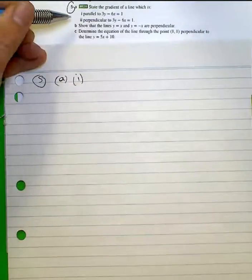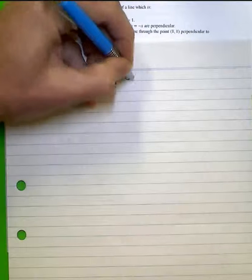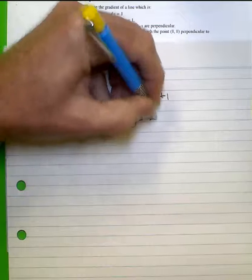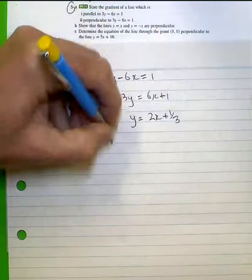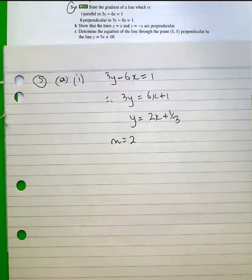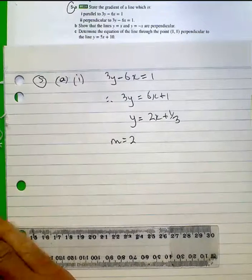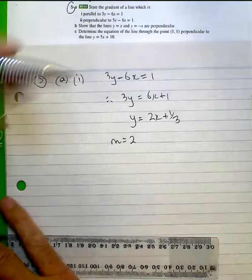So in the case of 1, we'll just rearrange that so it's in the format of y equals mx plus c. So m is equal to 2. So any line that has the gradient of 2 is parallel to that.